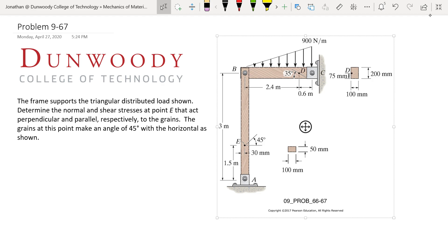We have a frame that's supporting a distributed load, this triangular distributed load, and we're asked to find the normal and shear stresses at E that are parallel and perpendicular to the grains. The grains here are at 45 degrees as shown, and this is the shape of our member at this point.